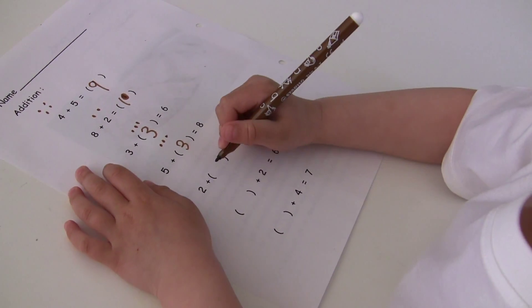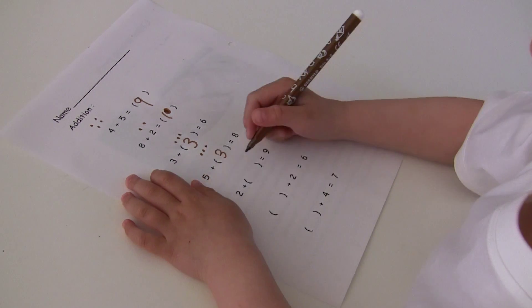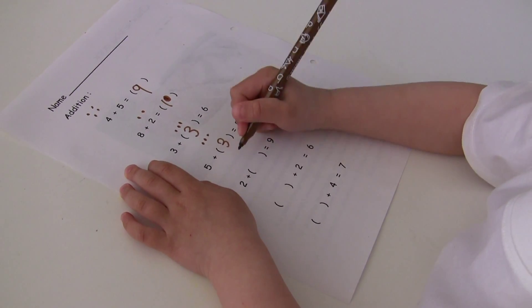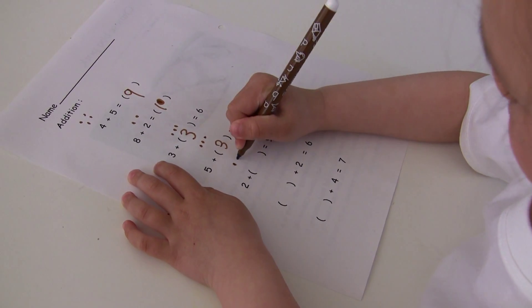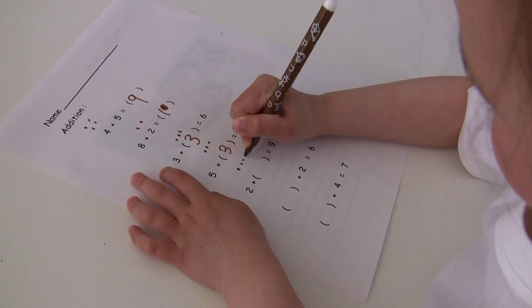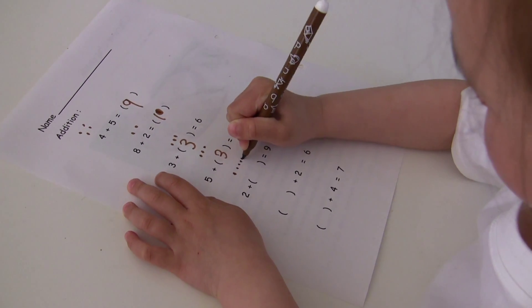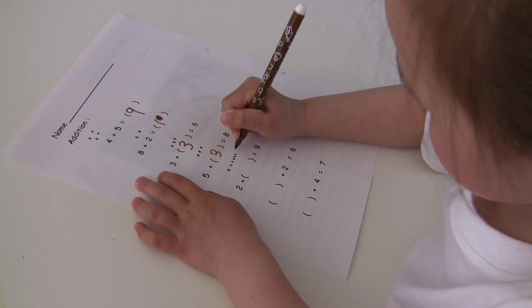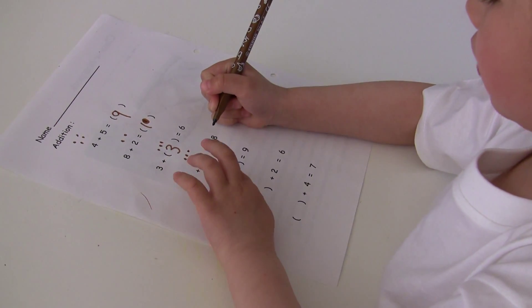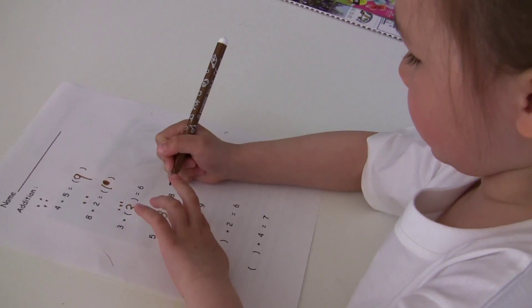2 plus how many equals to 9. 2, 3, 4, 5, 6, 7, 8, 9. So 1, 2, 3, 4, 5, 6, 7.